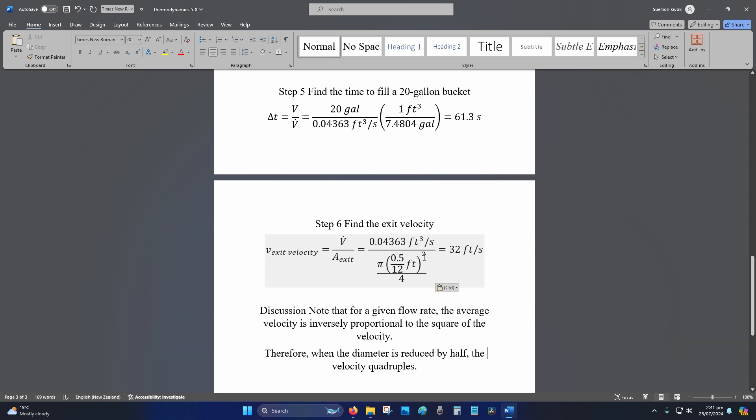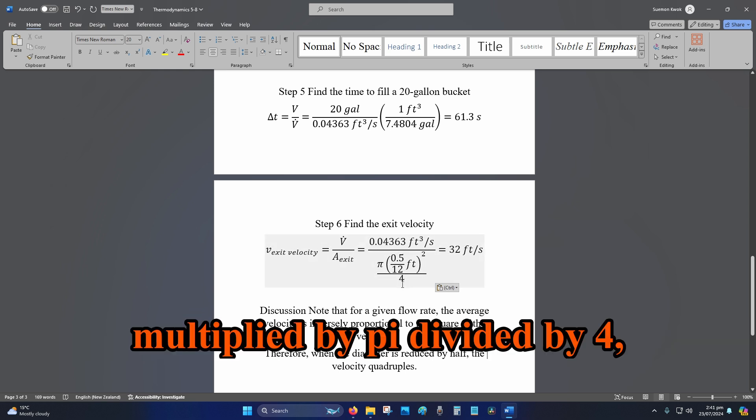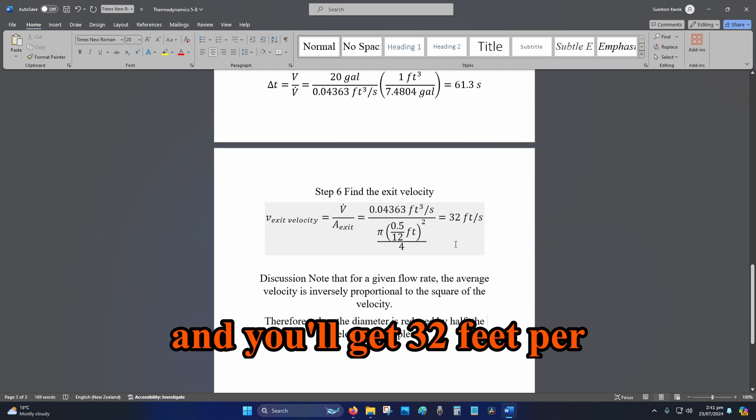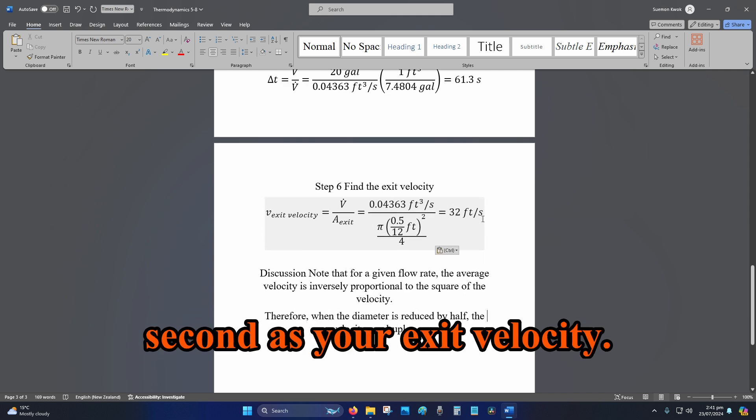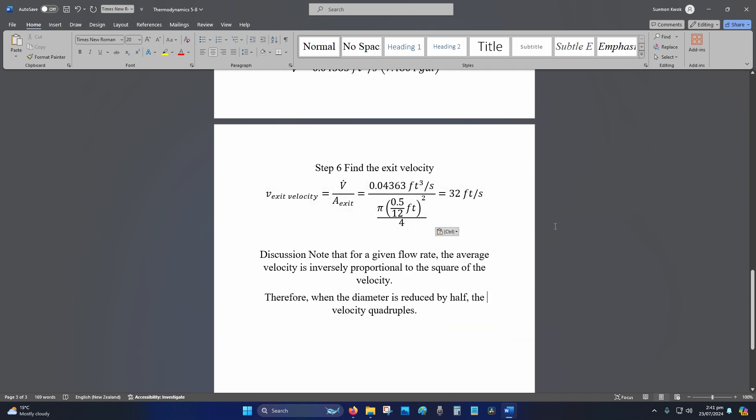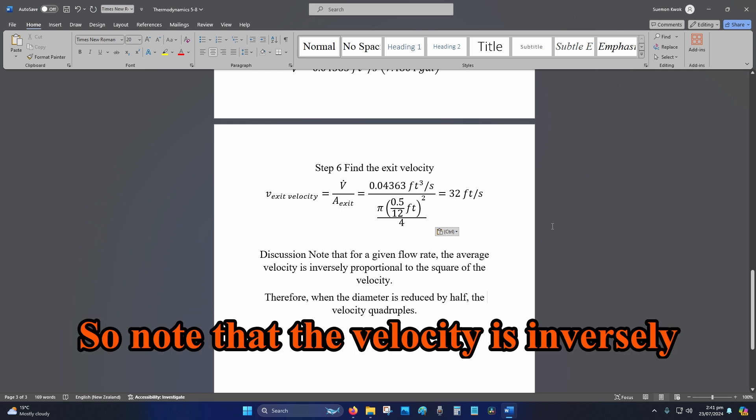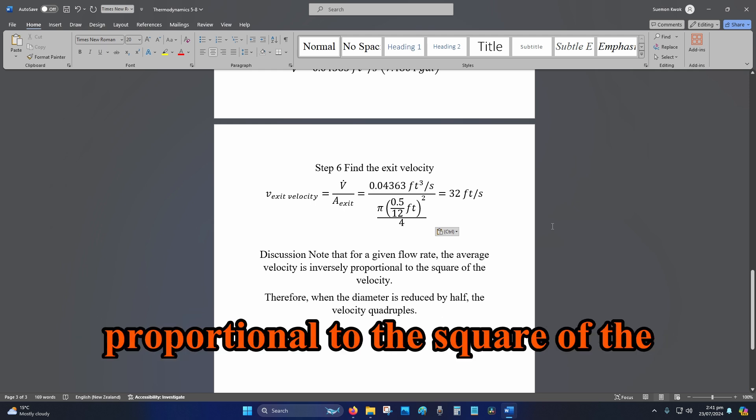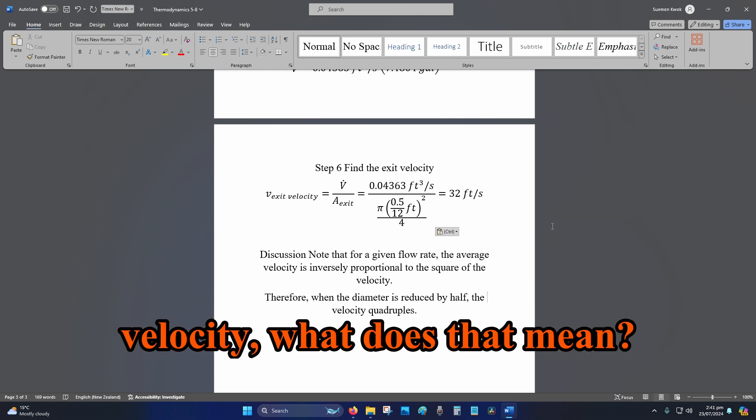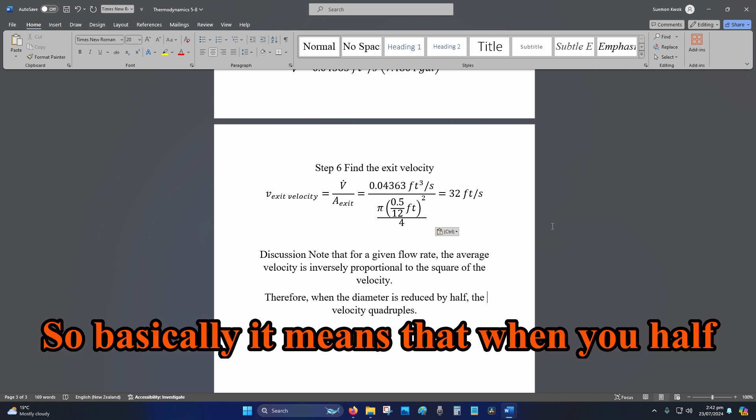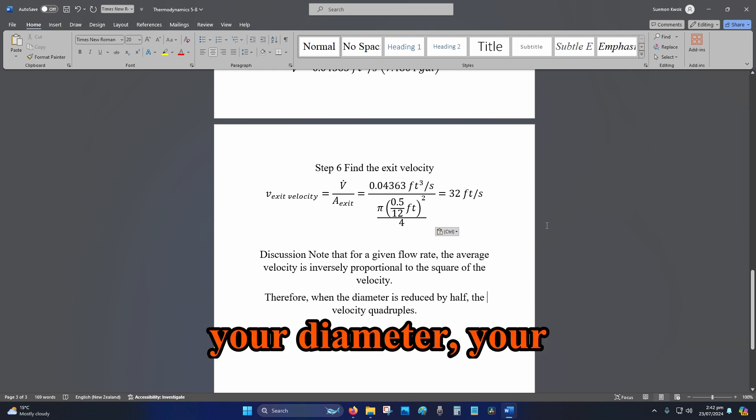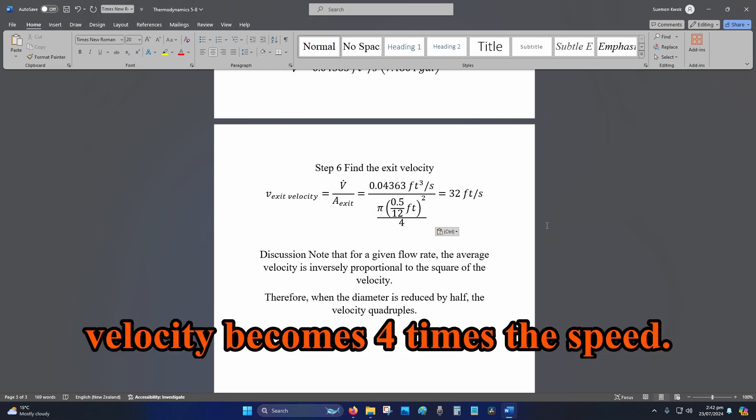And that is also squared, multiplied by pi, divided by 4. And you'll get 32 feet per second as your exit velocity. So note that the velocity is inversely proportional to the square of the diameter. What does that mean? So basically it means that when you half your diameter, your velocity becomes 4 times the speed.